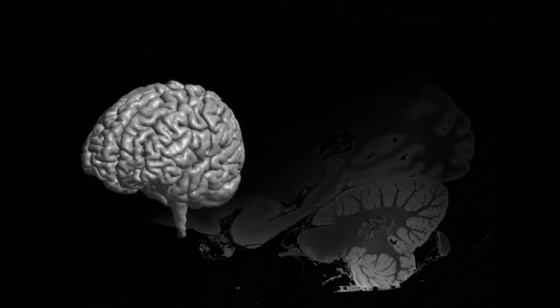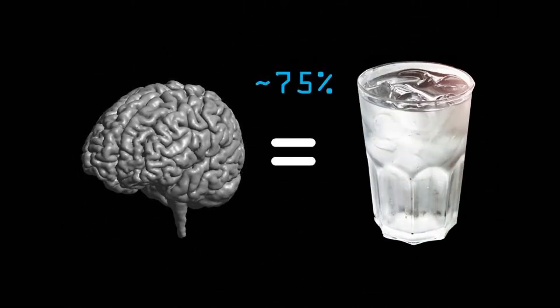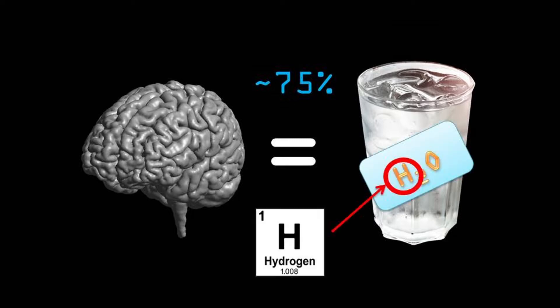Alright, so this is a brain. And the brain consists of a lot of water. A water molecule is known as H2O, and the H stands for hydrogen. And hydrogen is kind of special, since it has only a single proton and no neutrons.